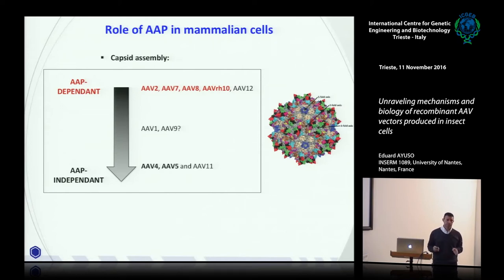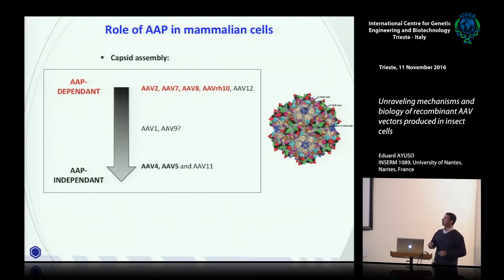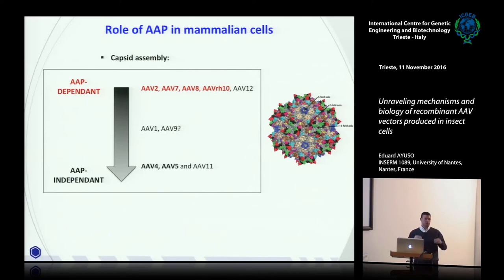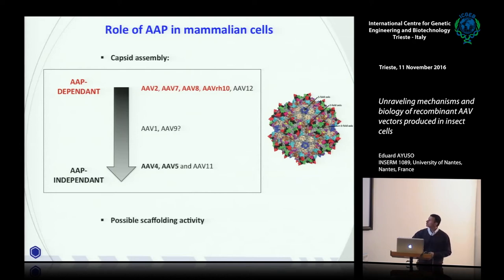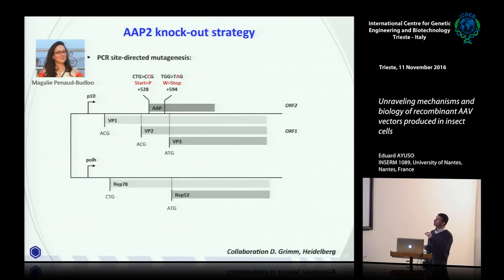If you do not have AAP — if you mutate AAP — you do not get any assembled vector. However, some serotypes such as AAV5 can be completely independent of AAP, and others are partially dependent. The question we investigated was whether AAP is required in the insect cell system. This was done in collaboration with Dirk Grimm, who had already shown complete AAV2 AAP dependence in mammalian cells.